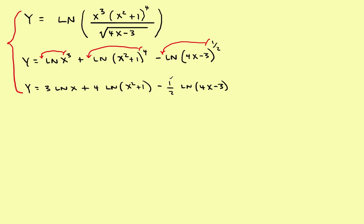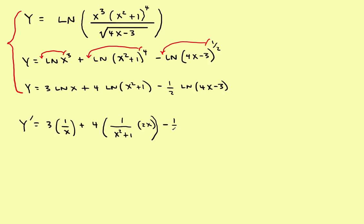Now take the derivative. y prime equals the constant 3 times 1 over x, plus the constant 4 times 1 over the argument times the derivative of the argument, which is 2x, then minus one-half times 1 over the argument times the derivative of the argument, which is 4. Use the log rules to split the expression into parts, find the derivative of each part, and it's much easier.